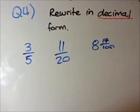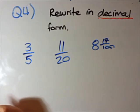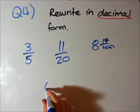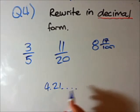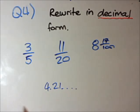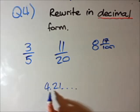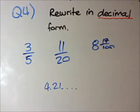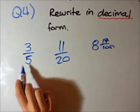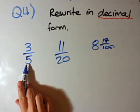Question 4. We want to rewrite these fractions in decimal form. Decimal form is when you have a number like 4.21 — with a point and then some numbers. This could be your class average out of a test of 5. The shortcut method to convert a fraction to decimal form is to get the denominator to 100.